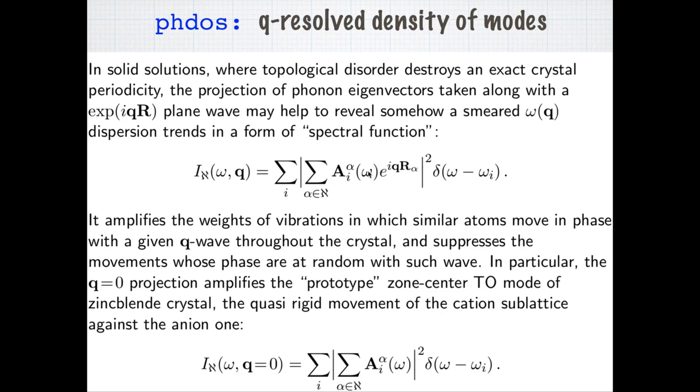To make it more clear, we can discuss the first formula in which the eigenvector, a component of eigenvector of a given atom numbered by alpha and the Cartesian direction numbered by i before being summed over the atoms of the supercells are multiplied with the exponential factor. In this way, the displacement of atoms which are in phase with a certain spatial wave of a given Q-vector are amplified and those which are out of phase will be suppressed. In this way, one can emphasize the trends which remind the phonon dispersion even if the system under study may be disordered, may be a type of alloy where, strictly speaking, the translation symmetry does not hold.